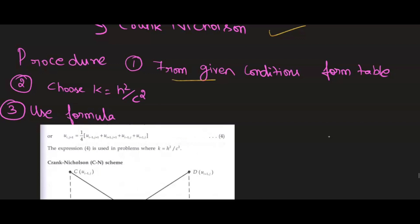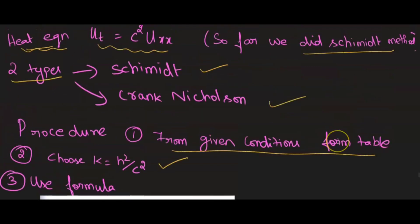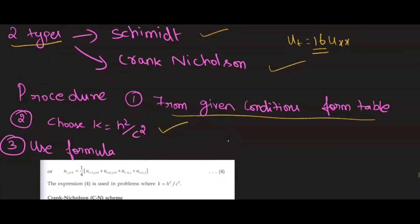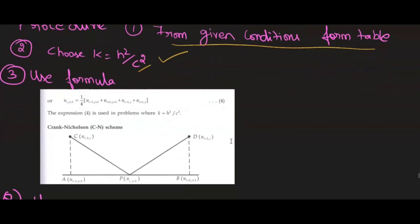Let's see the procedure. First of all, from the given condition, you are going to form the table. We have to choose k such that k = h² / c². What is the normal format? ut = c² uxx. This c² will be given in the question. For example, ut = 16 uxx means c² = 16, so c = root of 16. Using the given c in each problem, h will be given and we have to choose k. After the tabular column, we use the formula: u(i, j+1) = (1/4) × [u(i-1, j+1) + u(i+1, j+1) + u(i-1, j) + u(i+1, j)]. This is the formula — it is 1/4 into the average of 4 values.